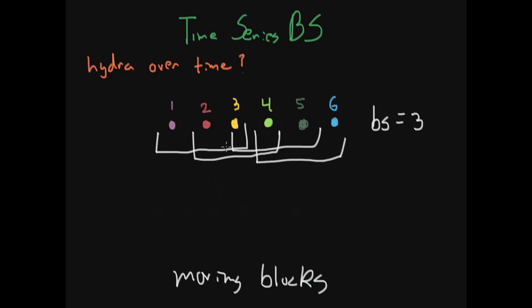So in this case, we start off with six data points that we could sample from, but because of our moving blocks, we've transformed these six data points into one, two, three, four data points.